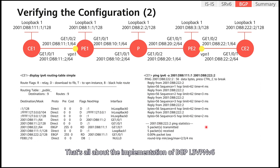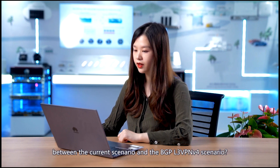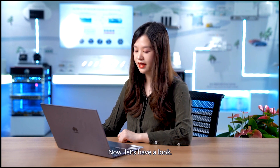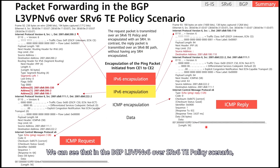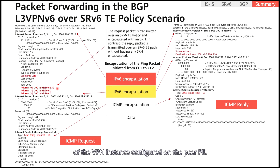That's all about the implementation of BGP L3 VPN v6 over SRv6 TE policy in the control plane. What are the differences in packet encapsulation between the current scenario and the BGP L3 VPN v4 scenario? In the BGP L3 VPN v6 over SRv6 TE policy scenario, the packet carries an SRH, in which the last SID is the End.DT6 SID of the VPN instance configured on the egress PE.